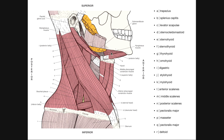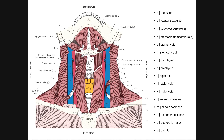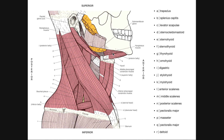Muscle K is the mylohyoid. Remember, that's a broad muscle that's going to be a little bit deep to the digastric. If we look at this picture, here's our mylohyoid and here's our digastric anterior belly — notice the mylohyoid is deep to that. We can even see that here in the lateral view. So K is mylohyoid.